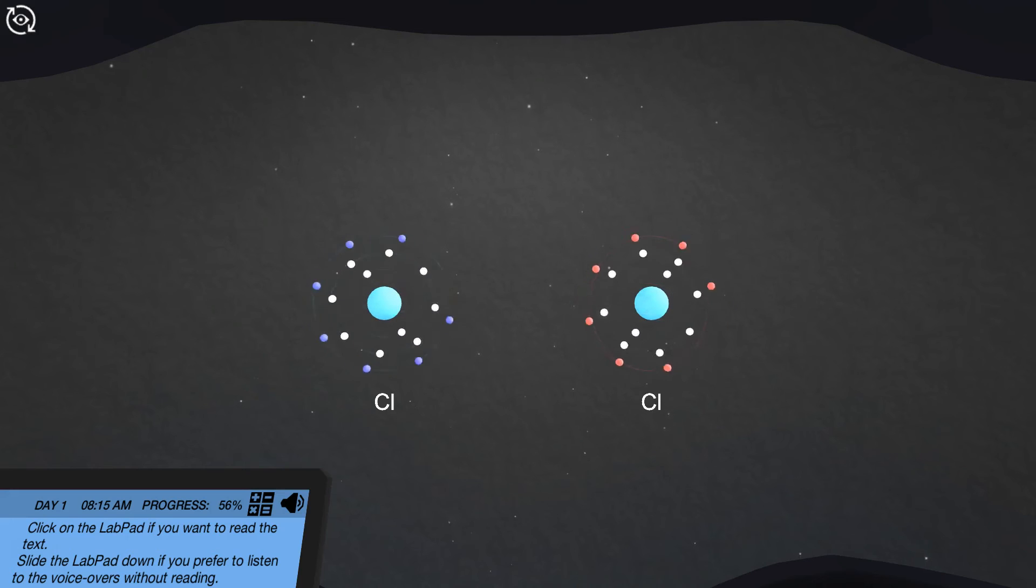Both chlorine atoms need to acquire 1 additional electron to fill their valence shell to 8 electrons. By sharing 2 electrons, each chlorine atom has 8 electrons some of the time to fill the octet in their valence shell.